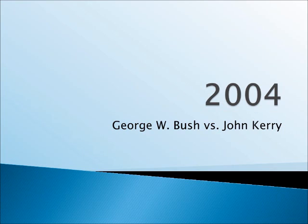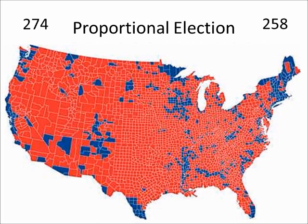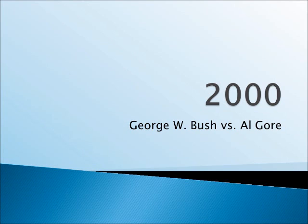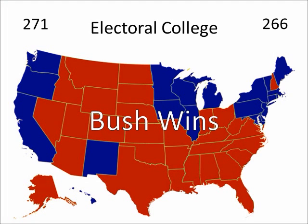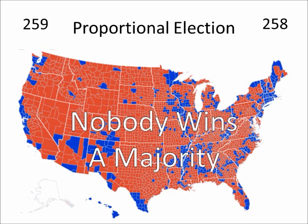2004 was a much closer election. However, Bush still wins in the electoral college, in the direct election, and would have won in a proportional election as well. Now, if we go back to the election of 2000, things really start to get interesting. George Bush won the electoral college vote, but he did not win the popular vote, and therefore would not have won the direct election. And under a proportional election, nobody wins — no person has a majority of the electoral college — which means it's a tie, an even bigger mess than before.